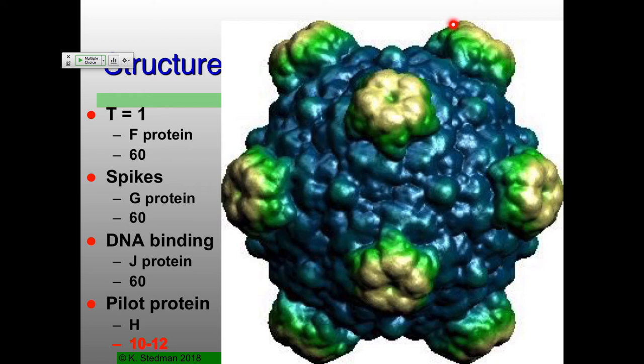There's one other structural protein — the pilot protein, the H protein — which is 10 to 12 copies. If it had 12 copies, where would you expect it to be? Thinking about icosahedral symmetry — the five-fold axis of symmetry. You'd expect one at each of those five-fold axes. Turns out that's actually completely wrong, but it's a great guess and that's what everybody thought. We'll get back to the H protein a little bit later.